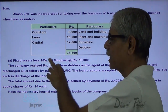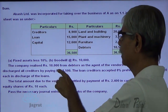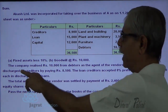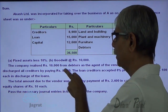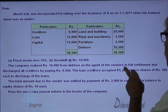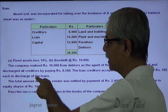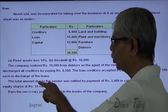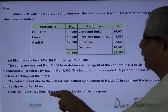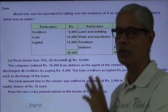Fixed assets are purchased at 10% less, and goodwill value is Rs. 10,000. The company realized Rs. 10,000 from debtors as agent of the vendor in full settlement, and discharged all creditors by paying Rs. 8,500. The loan creditor accepted 8% preference shares of Rs. 100 each in discharge of the loan. The total amount due to the vendor was settled by payment of Rs. 2,400 in cash and the balance in equity shares of Rs. 10 each. Pass general entries in the books of the company.